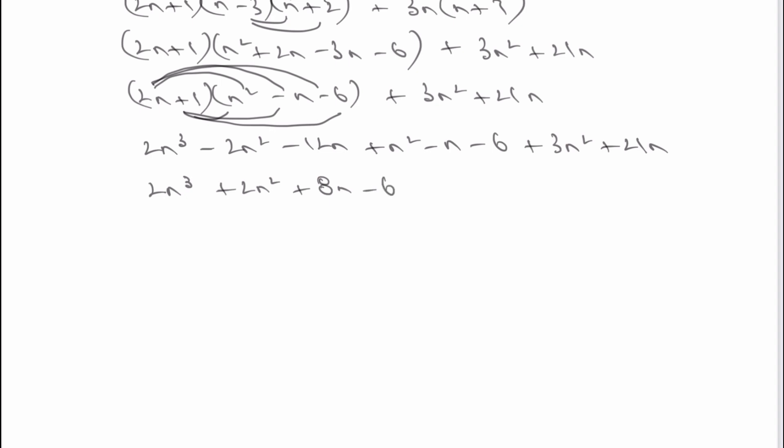You should end up with this expression. And all I've done here is I've just said, well, I've got 2n squared here, and I've got plus n squared and then plus 3n squared. So all I'm doing is gathering up the like terms.